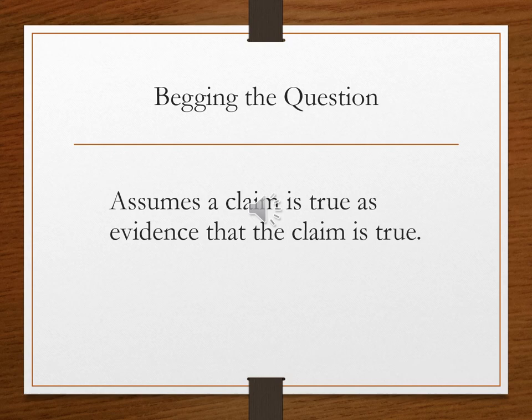We call it begging the question because when you make an argument like that — my coffee cup is orange because my coffee cup is orange — you're begging someone to ask: why should I think your coffee cup is orange? What's the evidence? Another way of referring to these arguments is that they are circular arguments — they end up where they start off. They just assume the goal or conclusion is true from the outset.